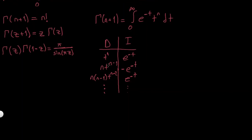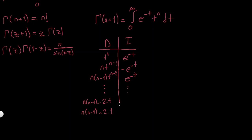Continuing the pattern: when I go up to n derivatives I have power n-1, and if I go up to 2 derivatives I have t^1, so the coefficients are n, n-1, ..., 2, 1. If I differentiate once more, n*(n-1)*...*2*1 is the last derivative, and the next one is 0, so I can also write that zero term.